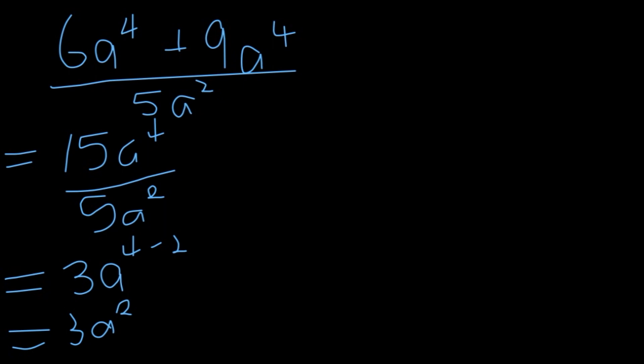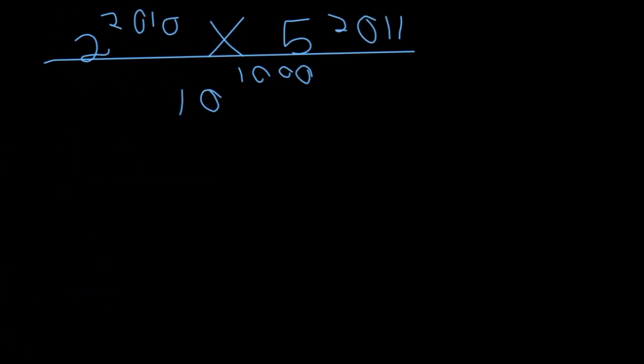That's your final answer: 3a squared. Now let's look at this example: 2 to the power of 2010 multiplied by 2 to the power of 2011, all over 10 to the power of 1000. This type of example comes up especially in grade 11. Those who don't know the laws of exponents will be inclined to punch this into a calculator, but unfortunately this is a very large number — the calculator display is too small to show the answer, and you'll get a scientific notation error.